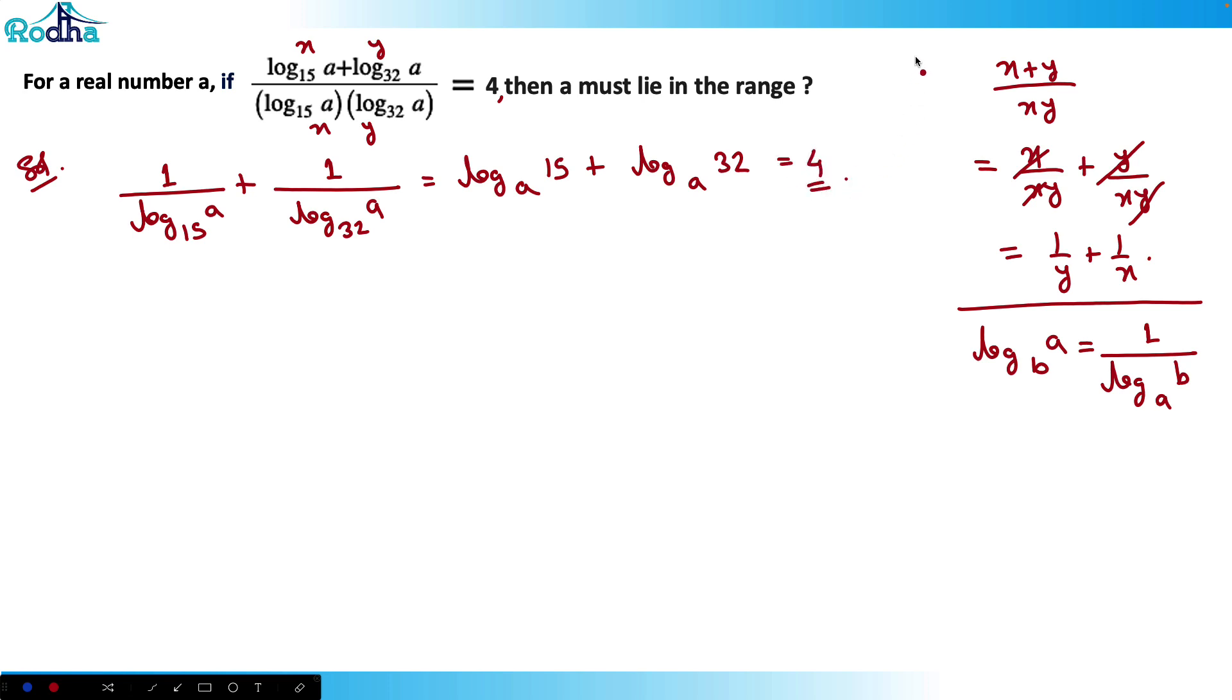Now we have got this external addition. This is actually the formula: log_a(m) + log_a(n) is equal to log_a(mn). So it gets multiplied. So I can use this formula here.